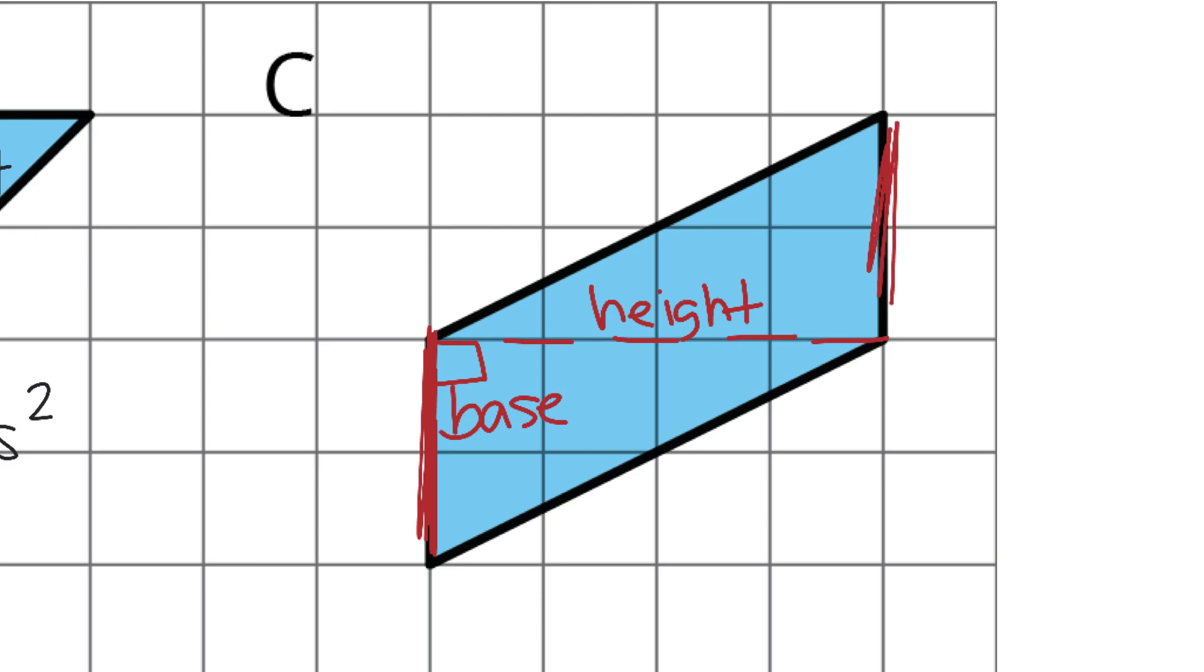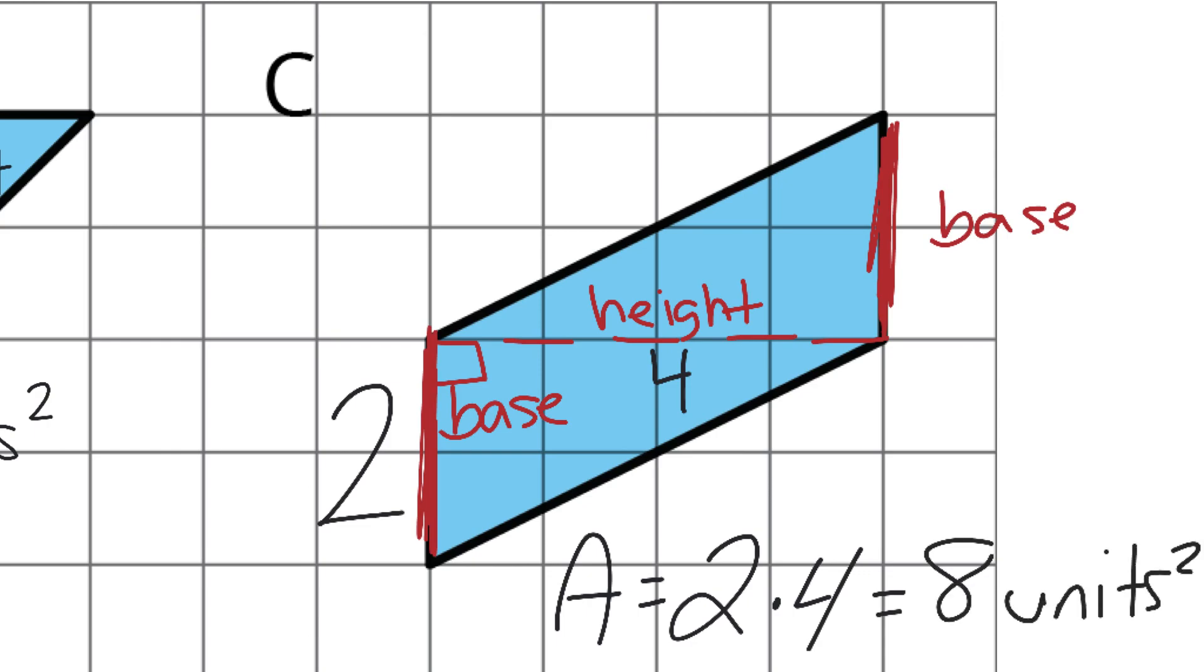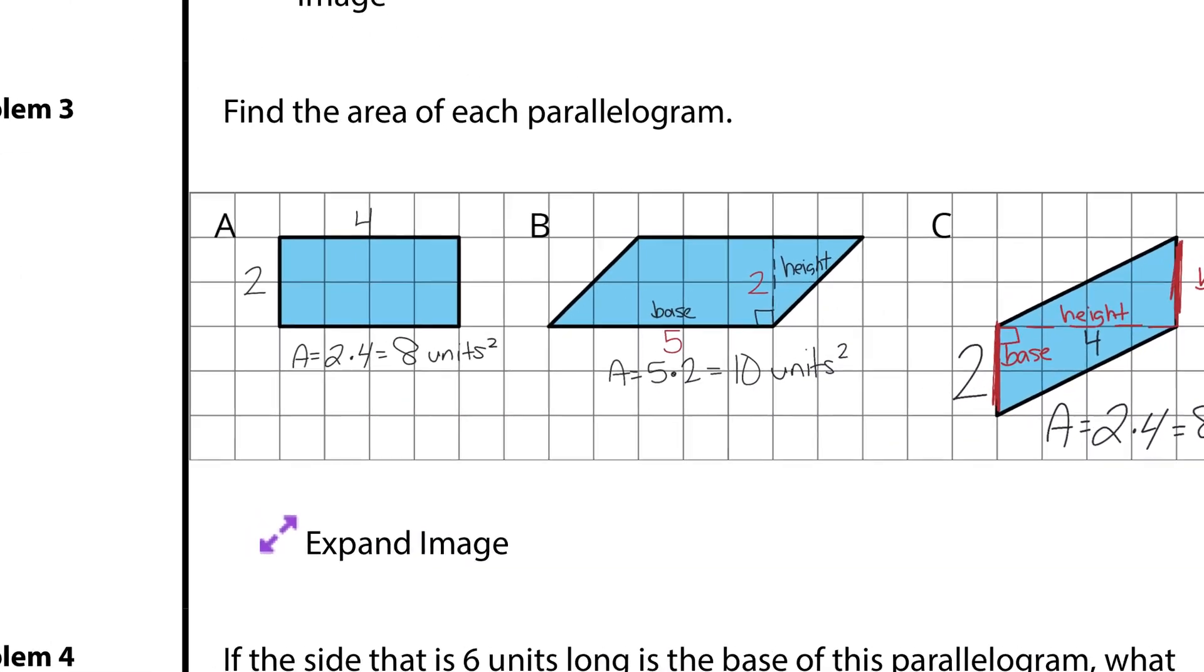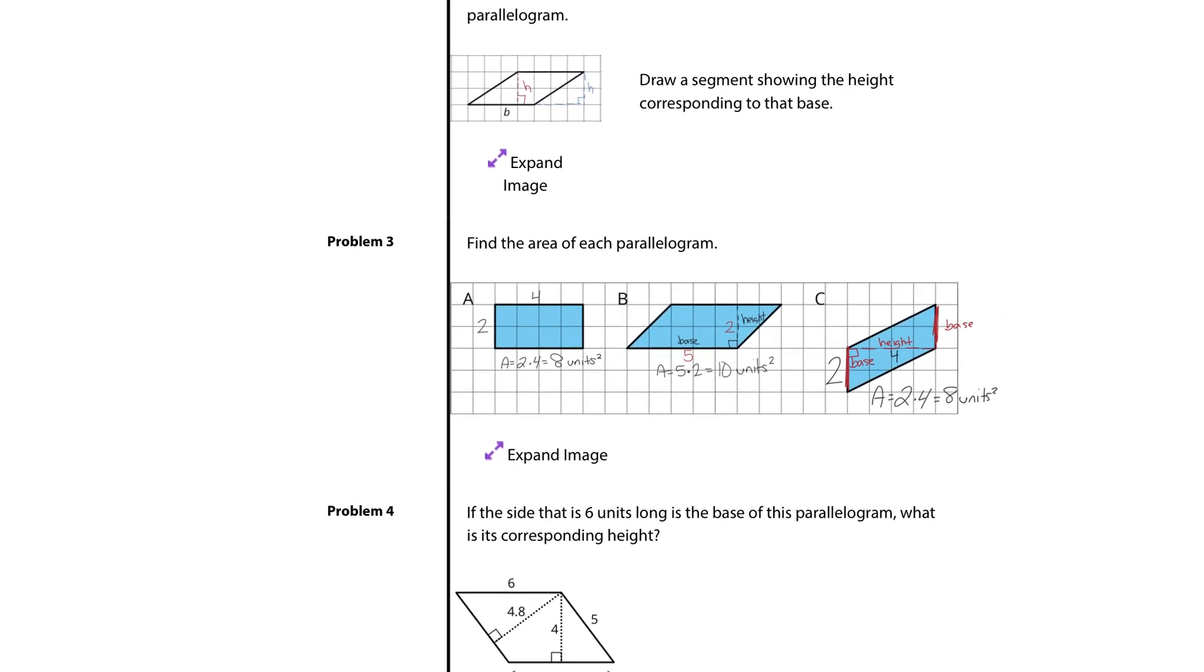Because really, under this scenario, I could have called this my base as well. What are my values here? Well, that base has a length of 2. This height has a length of 4. And so my area will be 2 times 4, which is 8 square units. And that's question 2, or 3.